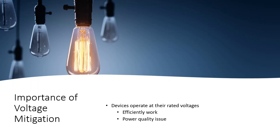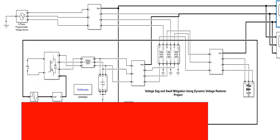Once again, the importance of voltage mitigation is that devices must operate at rated voltages to work efficiently. This is my simulating model — I will explain this model in my next video. This is just a screenshot; I have covered part of the model to protect my work. This is my three-phase programmable voltage source serving as the main grid. The system is connected through an injecting transformer or series transformer. This is my DVR, and this is my load.